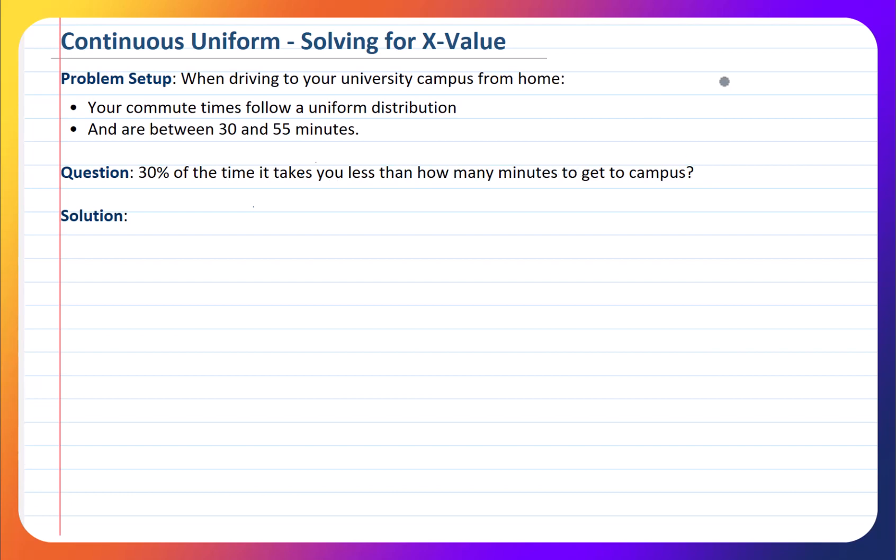First thing I recommend, as always, is to draw out a little number line here. So I'm just going to pause and draw that out. Now we need to think about less than how many minutes to get to campus. So 30% of the time takes you less than how many minutes. So I'm going to do a line here like this.